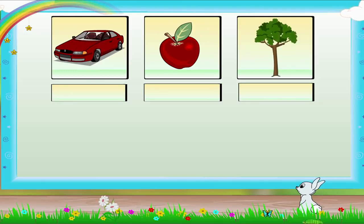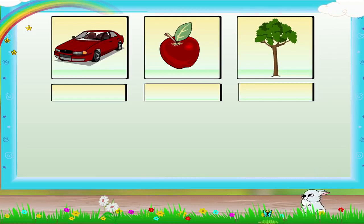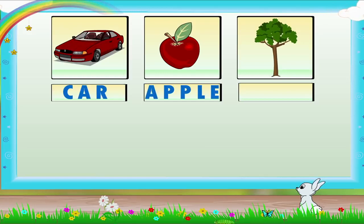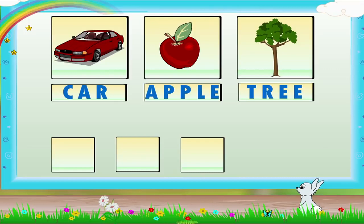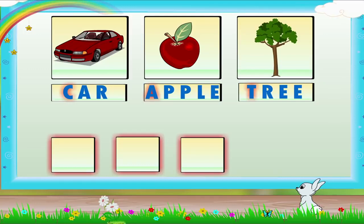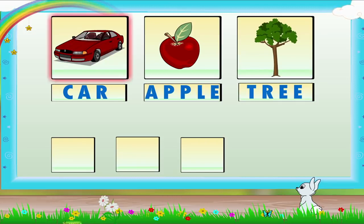Look at these pictures. Can you name the pictures? Good! The pictures are of a car, an apple and a tree. You have three squares here. Now pick the first letter of the names of the pictures and put them in the squares. The first picture is of a car. Which is the first letter of the word car? The first letter is C.